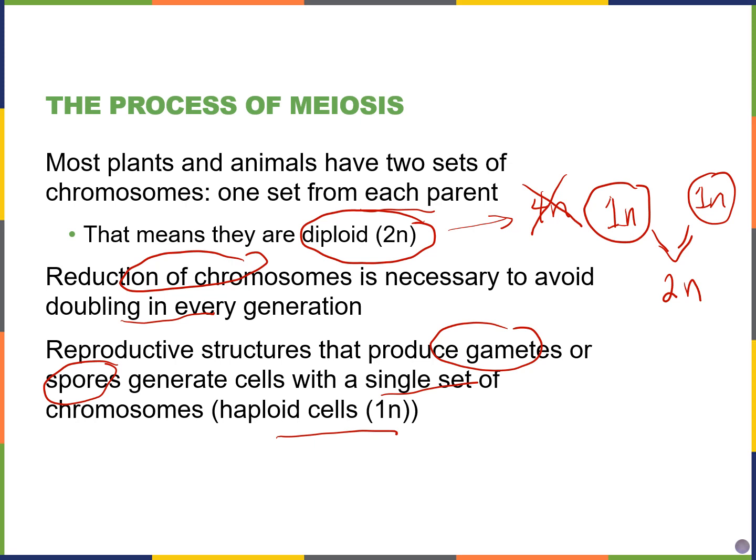The reproductive structures in humans are the gonads, like the testes and ovaries, and the gametes will be the sperm and egg — those will be haploid cells.